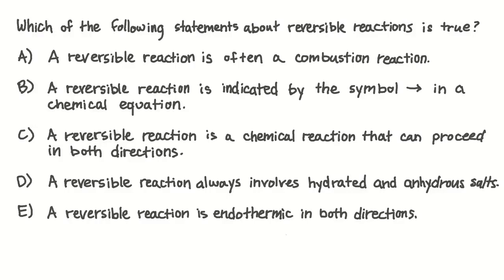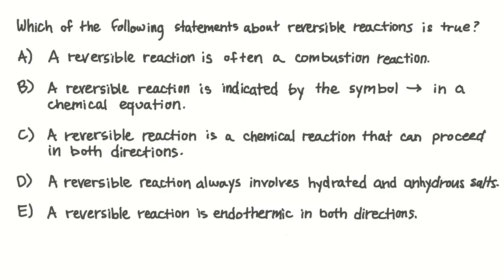Which of the following statements about reversible reactions is true? A: A reversible reaction is often a combustion reaction. B: A reversible reaction is indicated by a single double-headed arrow in a chemical equation. C: A reversible reaction is a chemical reaction that can proceed in both directions. D: A reversible reaction always involves hydrated and anhydrous salts. E: A reversible reaction is endothermic in both directions. A reversible reaction is a reaction that not only goes in the forward direction where the reactants combine to form the products, but also the reverse direction where the products combine to form the reactants. We can indicate this in our chemical equation by using two single-headed arrows. With this information, answer choice C is clearly the correct answer.